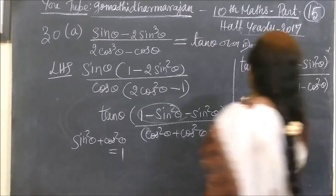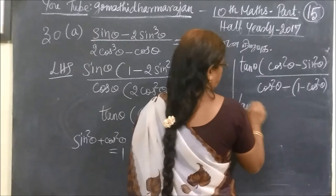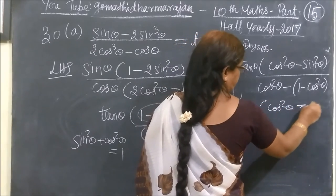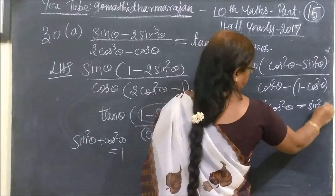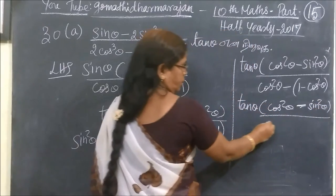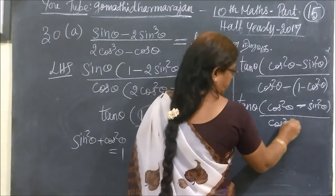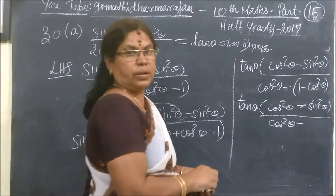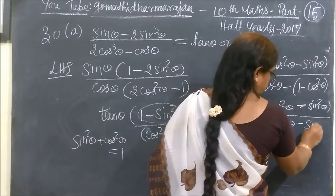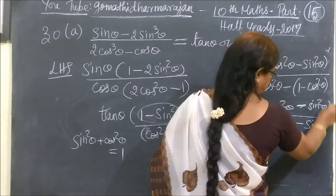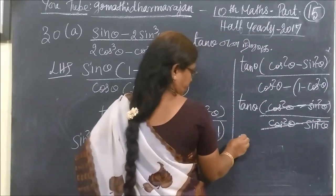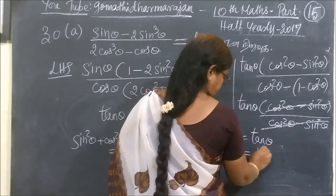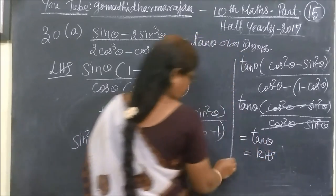Here we write tan theta, then bracket cos squared theta minus sin squared theta. Cos squared theta then minus — put 1 minus cos squared theta equals sin squared theta. So this is equal to sin squared theta. So this is equal to tan theta, and this is equal to RHS.